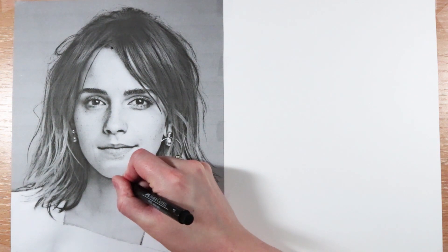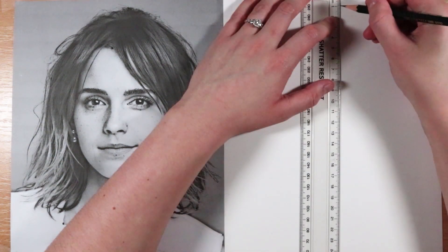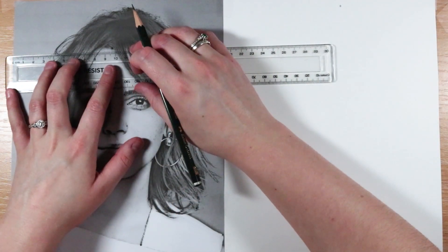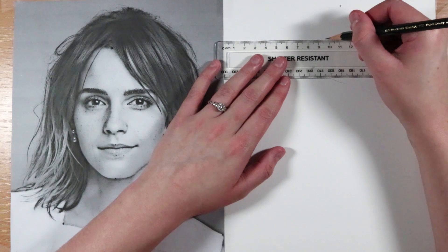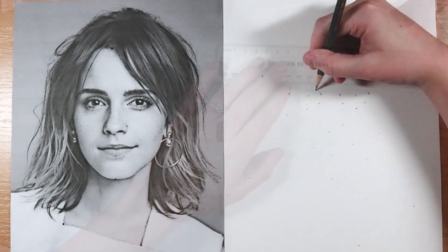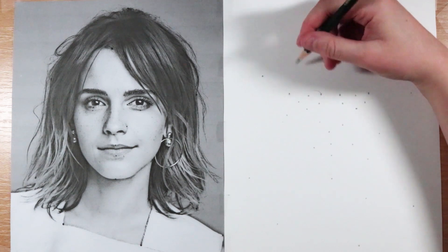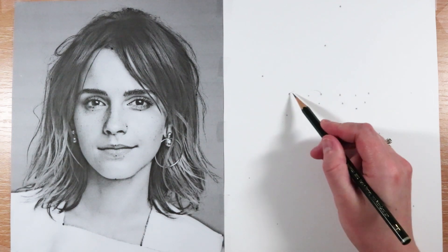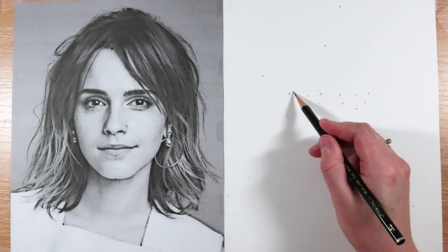Now moving on to another example and this one is of a portrait. Again no matter what the subject is I like to follow the exact same procedure and again just plot out these reference points for the portrait. I like to do mainly the main features - a few for the eyes, nose, mouth, top of the head, bottom of the chin, all of that sort of stuff just to really help get the proportions accurate.